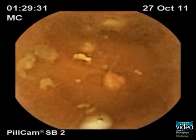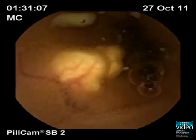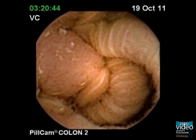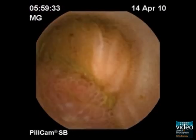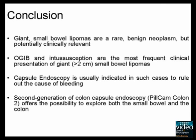Small lipomas are usually asymptomatic and not clinically relevant; they might present symptoms if of large dimensions. In this case, the lipoma was diagnosed as a protruding lesion with an erythematous and large roundish mucosal pattern. This endoscopic pattern is comparable to that of another case from our center. Giant small bowel lipomas are a rare, benign neoplasm but potentially clinically relevant. Obscure gastrointestinal bleeding and intussusceptions are the most frequent clinical presentations. Capsule endoscopy is usually indicated in such cases to rule out the cause of bleeding. Second generation colon capsule endoscopy offers the possibility to explore both the small bowel and the colon.